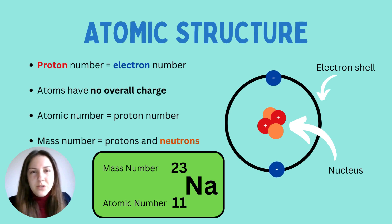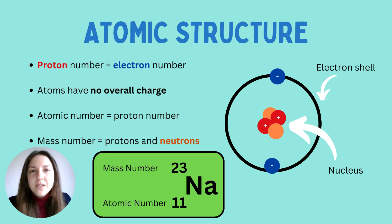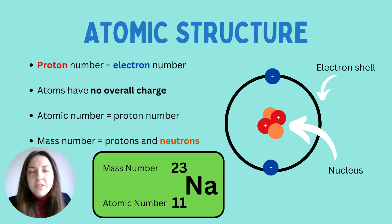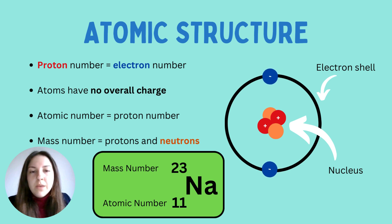Let's go back to the beginning where we look at atomic structure. Every atom has a nucleus — the center of the atom — which contains the majority of the mass: the protons, which are positively charged, and the neutrons, which are neutral. The electrons surround the nucleus in electron shells and have a negative charge. The overall charge of the atom is zero because the number of protons equals the number of electrons. The majority of mass is in the nucleus because protons have a relatively large atomic mass. We can find the mass number from the periodic table — the biggest number equals the number of protons plus neutrons — while the smaller number is the atomic number, which is just the number of protons.